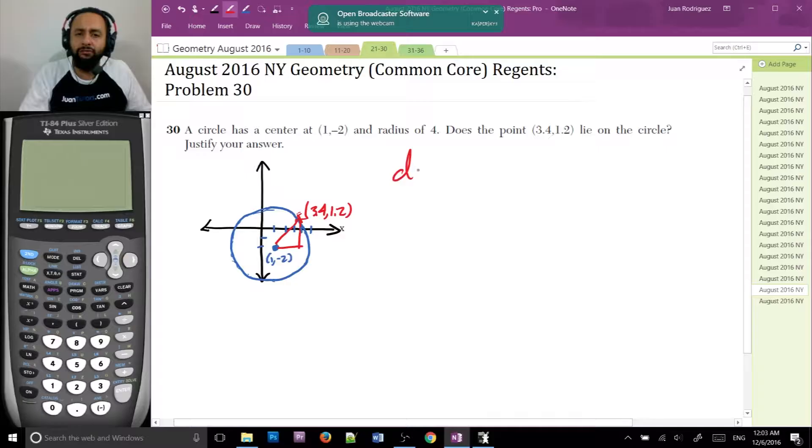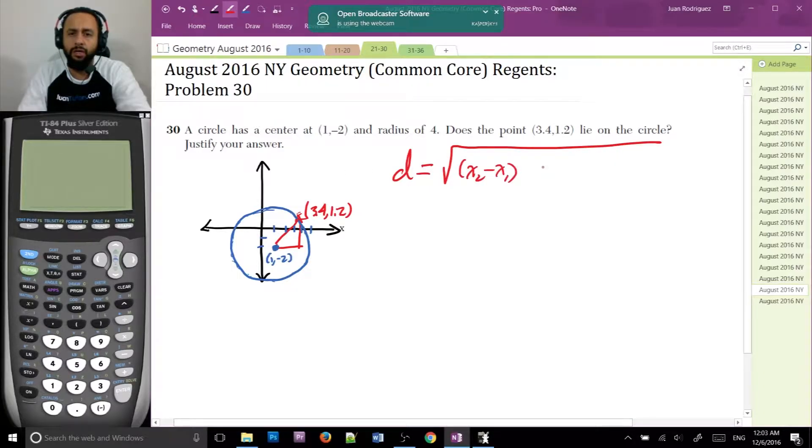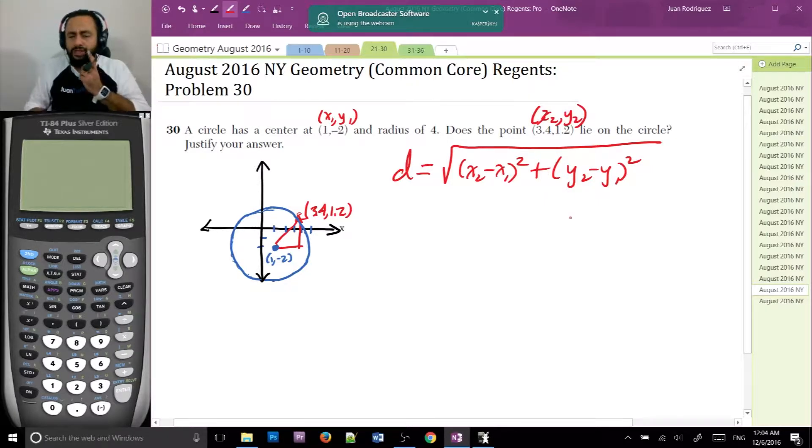So the distance formula is equal to the square root of x2 minus x1 squared plus y2 minus y1 squared. So I'm going to call the center the first point, x1, y1. And I'm going to call this other point the second point, so x2, y2. So now I know what numbers to plug in. I have four numbers and four bases here. I know what to plug in.